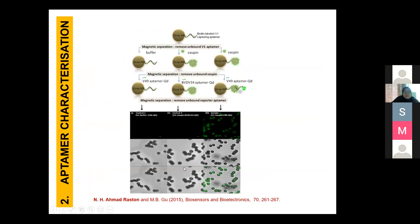Checking the fluorescence signal for characterization: with only buffer and V49 as the signaling probe — no VASPIN — no signal is seen. With VASPIN but using a different aptamer, BVDV aptamer (which is an aptamer for a virus), again no signal. But with the combination of V49 and V1 aptamer, we can see the signal — confirming that sandwich binding occurred.